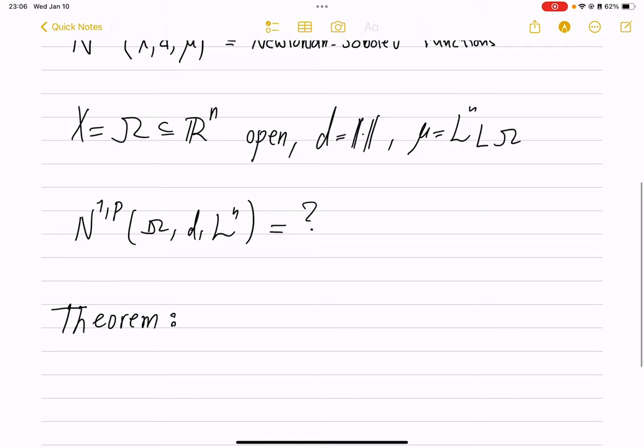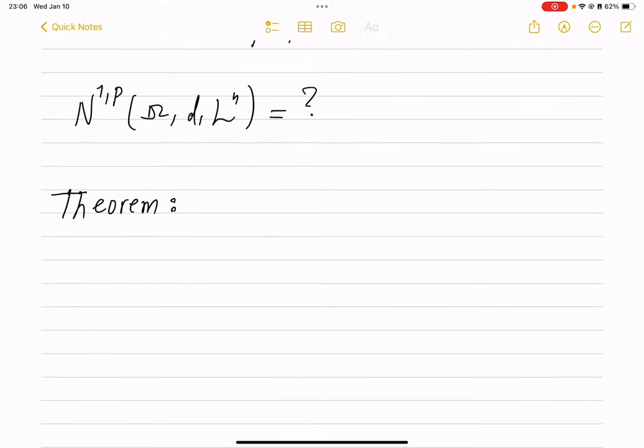And the answer, which can be found in the book that I just referenced, is that indeed W^{1,p} of omega, which is the classical Sobolev spaces defined through weak derivatives, ends up being equal to the N^{1,p} omega space. We're talking about p between 1 and infinity.